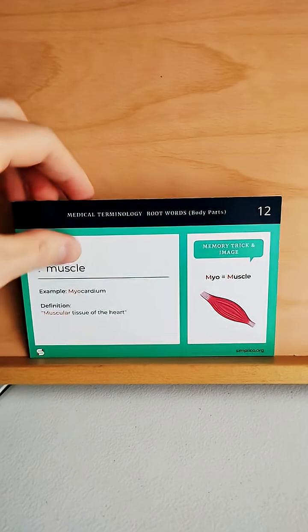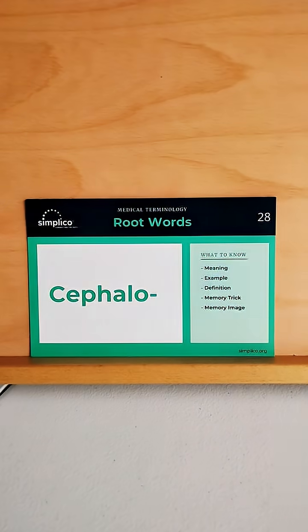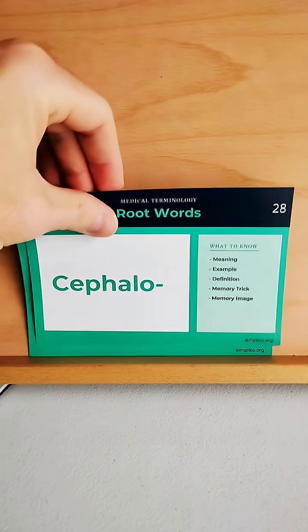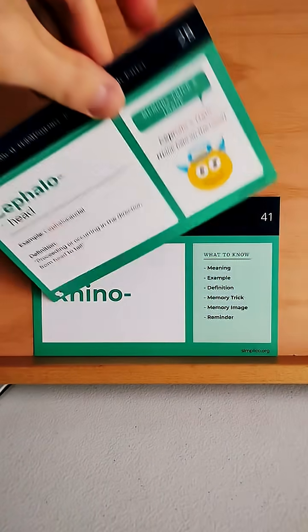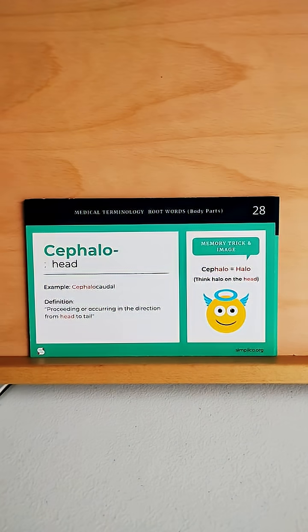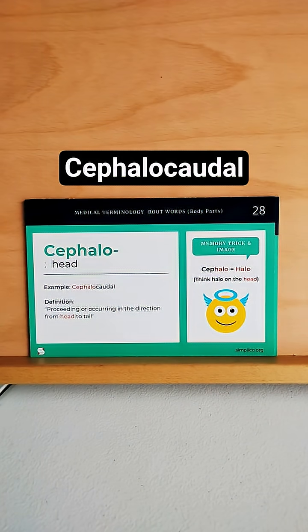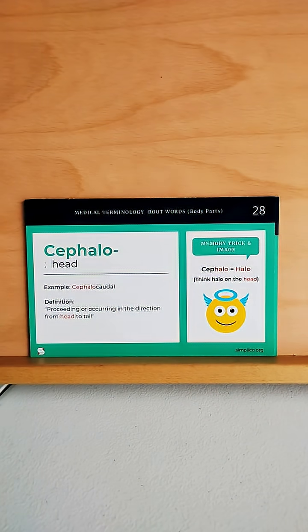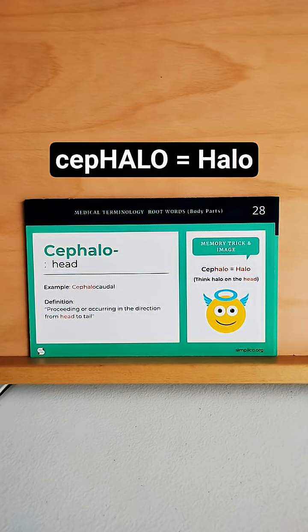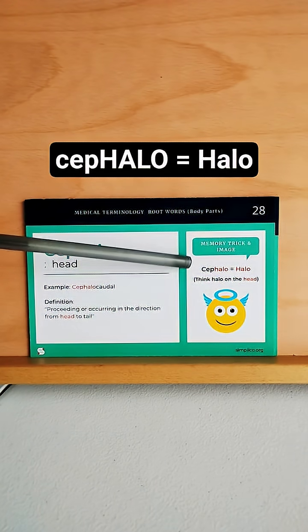Next we have cephalo. What does this mean? Cephalo refers to the head. An example is cephalocaudal, which is proceeding in the direction from head to tail. The memory trick is to think of a halo on your head.